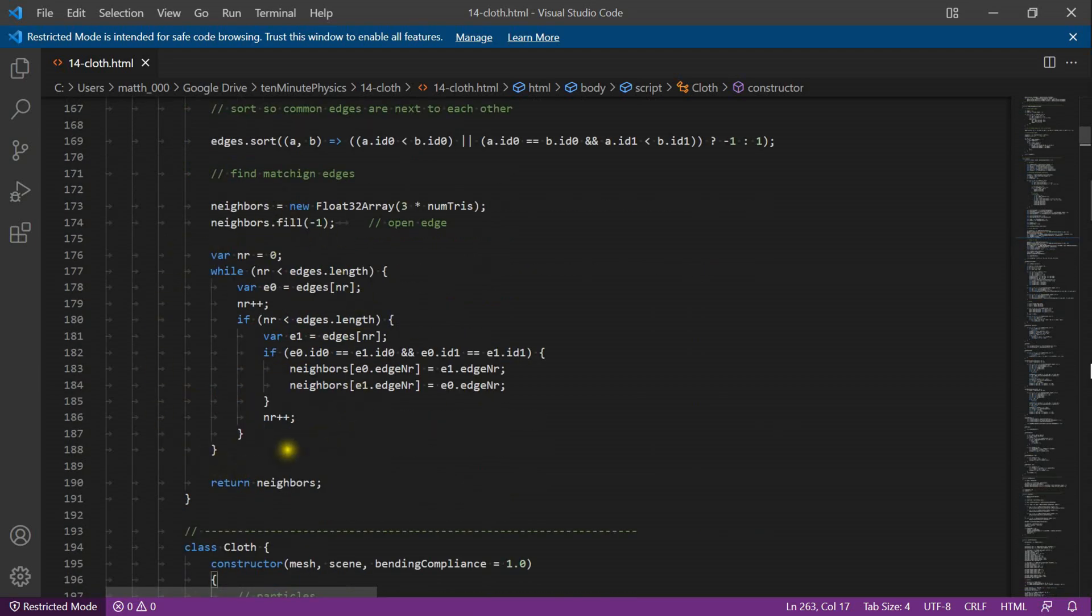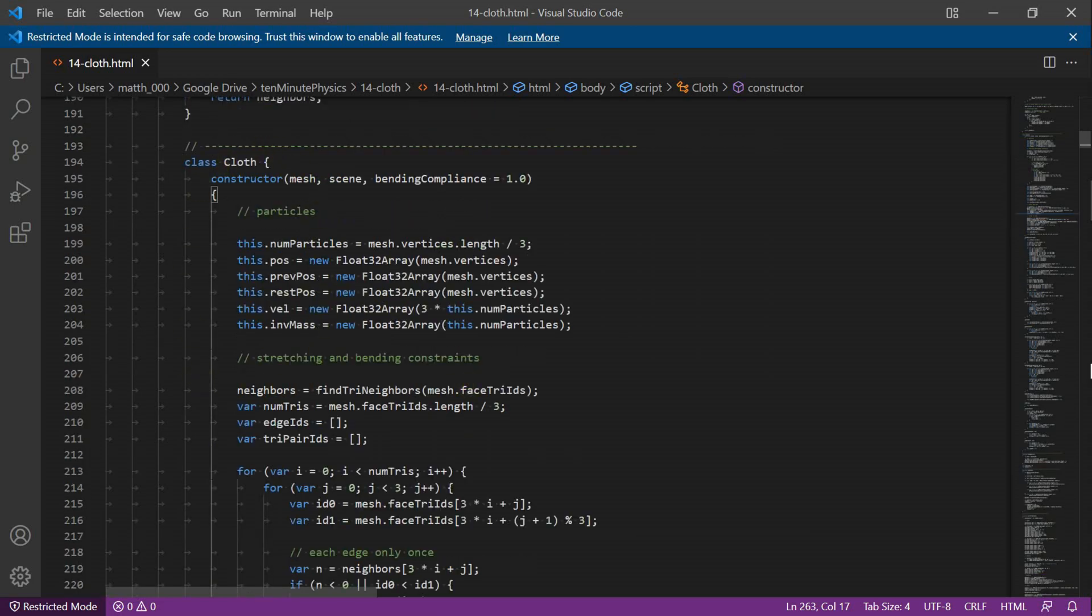Then I run through all the entries of the sorted list. If the indices of two consecutive entries in the list are equal then I fill in the neighbor list accordingly. The cloth class is very similar to the soft body class. An important difference is how to create the constraints. Here I first compute the neighbors.